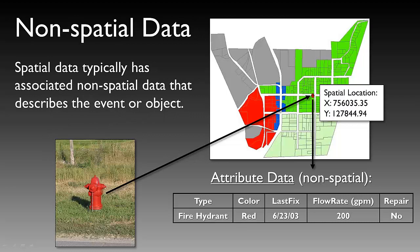What makes spatial data powerful, in addition to the XY location or geographic coordinate, is what we call non-spatial or attribute data. The non-spatial attribute data actually describes the object or event on the ground. Back to the fire hydrant example: the attribute data includes type, color (red), when it was last fixed, flow rate, and whether it needs a repair. All of that information is considered non-spatial, but it is tied to a spatial location through the XY coordinate. We will talk in depth about non-spatial or attribute data in a future lecture.